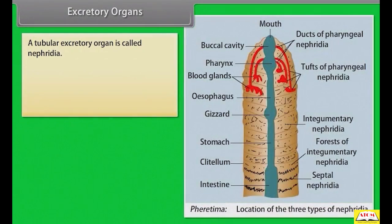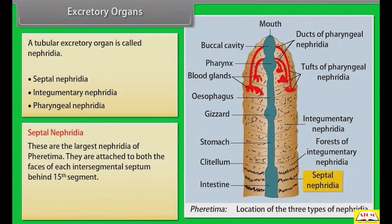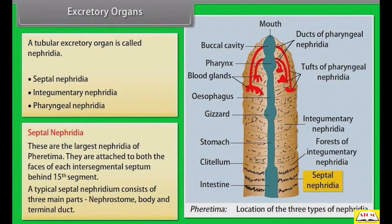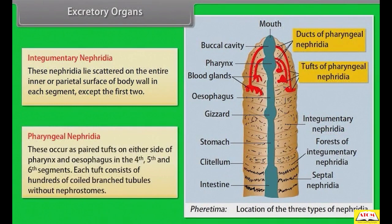The tubular excretory organ is called nephridia, and it is of three types: septal, integumentary, and pharyngeal. Septal nephridia are the largest nephridia of Pheretima, attached to both faces of each intersegmental septum behind the 15th segment, and consist of nephrostome, body, and terminal duct. Integumentary nephridia lie scattered on the inner surface of the body wall in each segment except the first two. Pharyngeal nephridia occur as paired tufts on either side of the pharynx and oesophagus in the 4th, 5th, and 6th segments, consisting of hundreds of coiled branched tubules without nephrostomes.